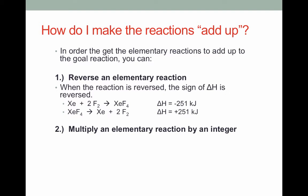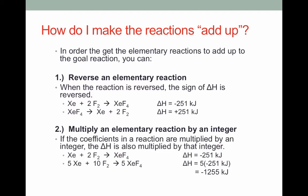We can also multiply an elementary reaction by an integer. For example, if we have XE plus 2F2 yields XEF4, we can multiply that reaction by the integer of say 5. That will give me 5XE plus 10F2 yields 5XEF4. If we do this, we will also multiply our delta H by that same integer. Because if 1 mole of xenon and 2 moles of fluorine releases 251 kilojoules, then 5 times that much xenon and fluorine will release 5 times that much energy.